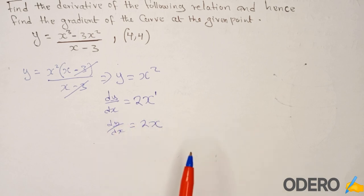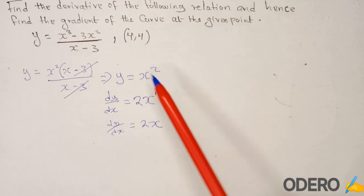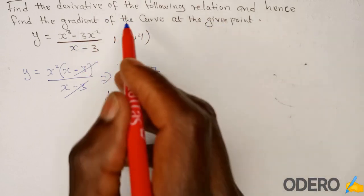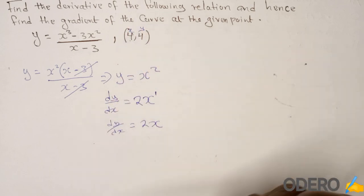So you're going to have dy/dx equals 2x. That is our gradient function. To get the gradient at this point, we substitute where there is x. We go to this point. This is the x coordinate and this is the y coordinate. So we take x equals 4.